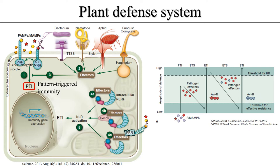However, in order to suppress this reaction, pathogens create new weapons through evolution, that we call effectors. The effector has a number of functions, the key of which is to suppress the plant PTI response. As a result, the plant becomes diseased again. This reaction is called effector-triggered susceptibility.